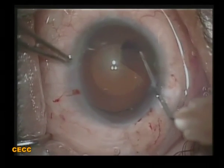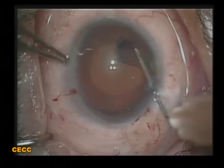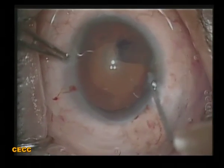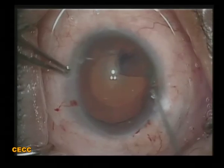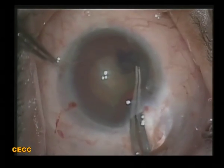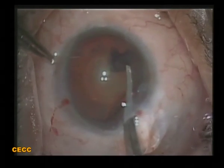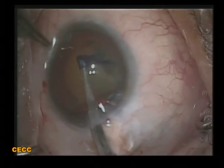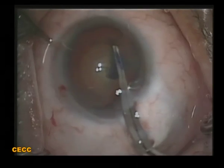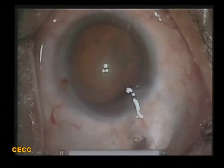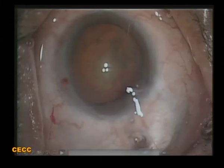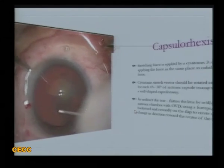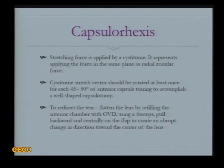I am trying to bring it back but realize it has already gone outside. I can't bring it back with a cystotome, so I take a capsulorrhexis forceps and pull it inwards and backwards. We now have a very large and eccentric rhexis, which is not desired, with a peripheral extension in the shape of the rhexis.